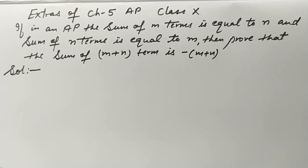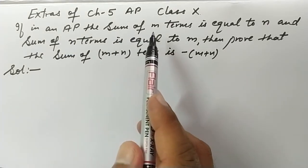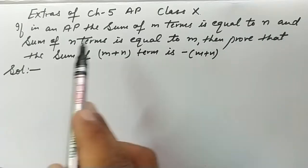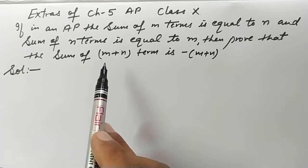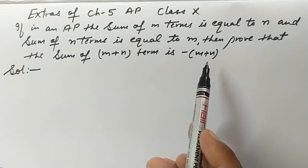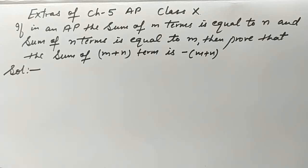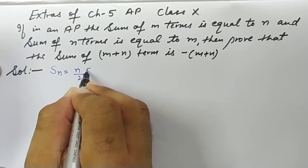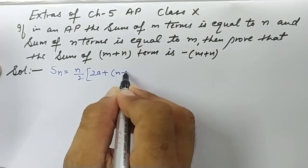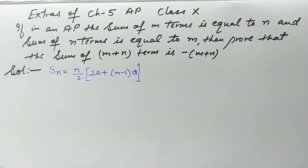Hello dear students, welcome to this YouTube channel. Let's do this extra question of Chapter 5, Class 10, Arithmetic Progressions. The question is: if in an AP the sum of m terms is equal to n and the sum of n terms is equal to m, then prove that the sum of m+n terms is minus (m+n). Before doing this question, we have one formula in AP — sum of n terms: n/2 into (2a + (n−1)d). We will use this formula in the question.